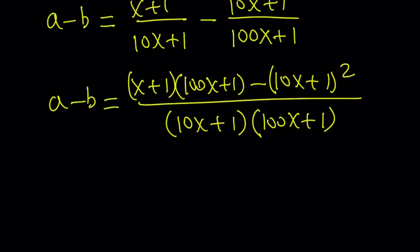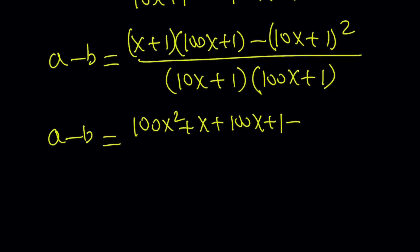Now let's simplify the numerator and then see what we can do about it. So we're going to distribute. When we do, we get 100x^2 + x + 100x + 1. And the second one is a perfect square. So if you expand it, you're going to get 100x^2 minus 20x minus 1 using the formula (a + b)^2 = a^2 + 2ab + b^2.